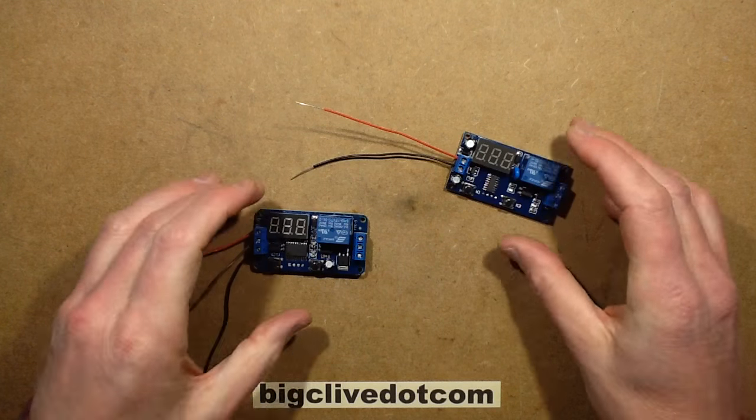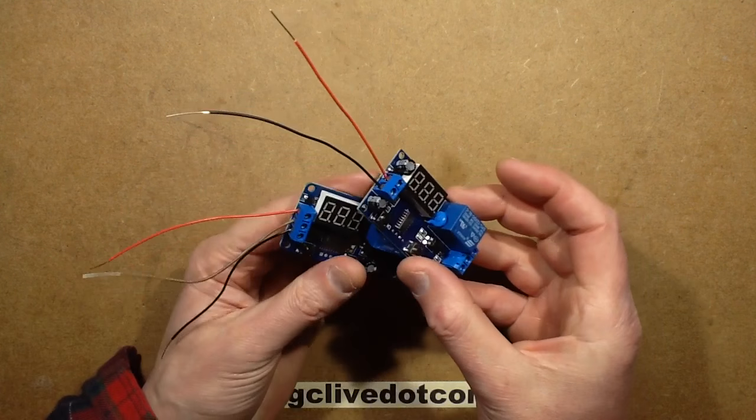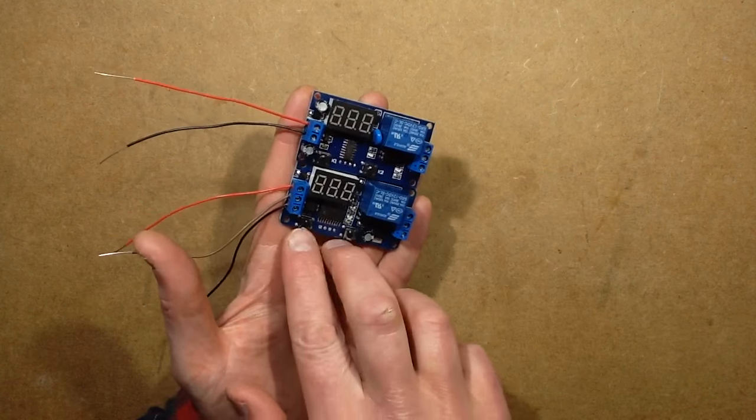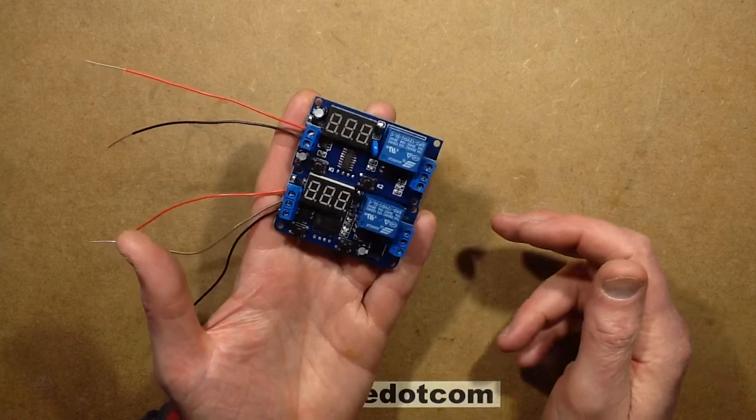Two little timer modules from eBay, and initially they look very similar. The contacts, the displays, the relays, the buttons are all in the same place, but this one has a different processor from this one.